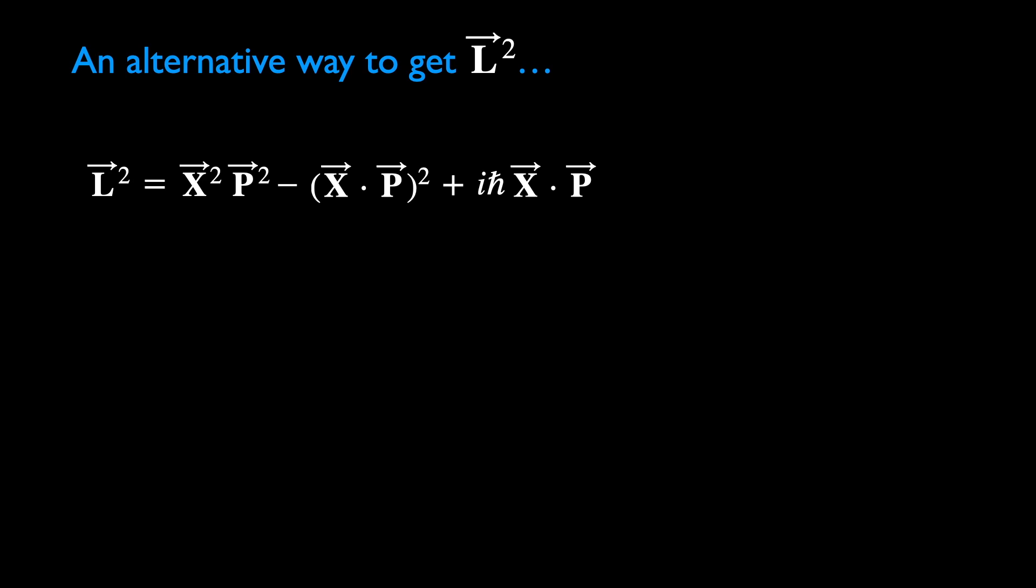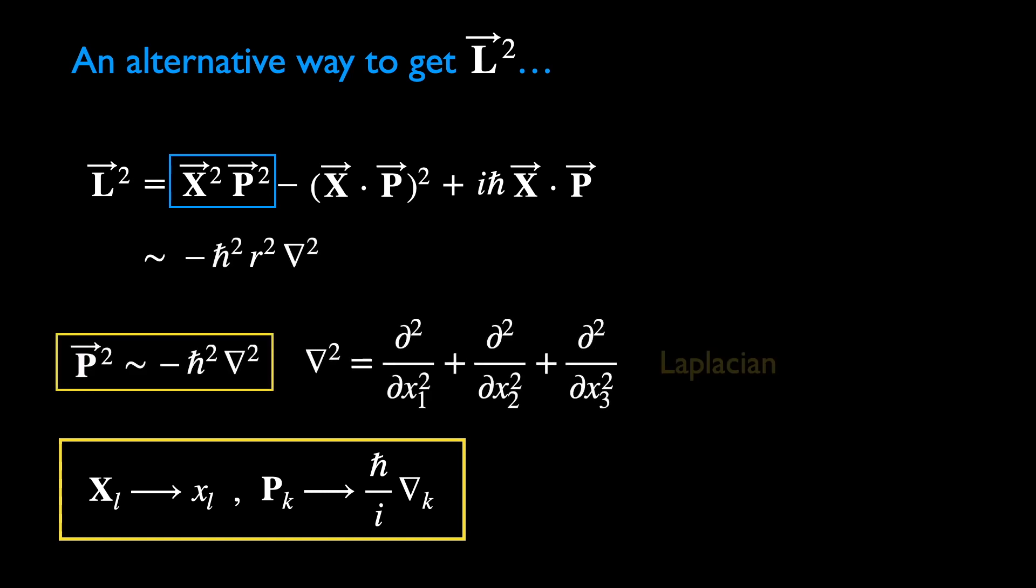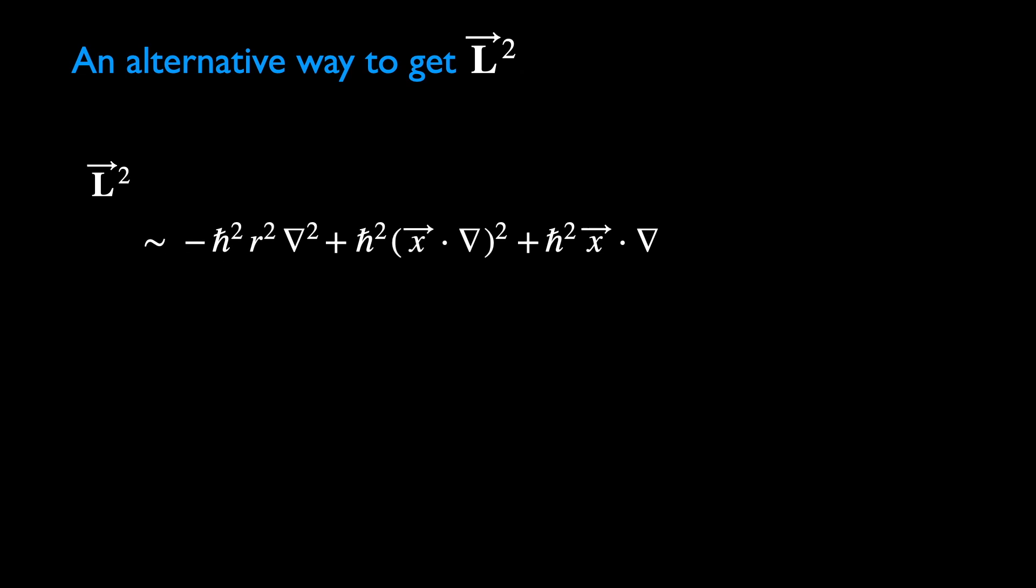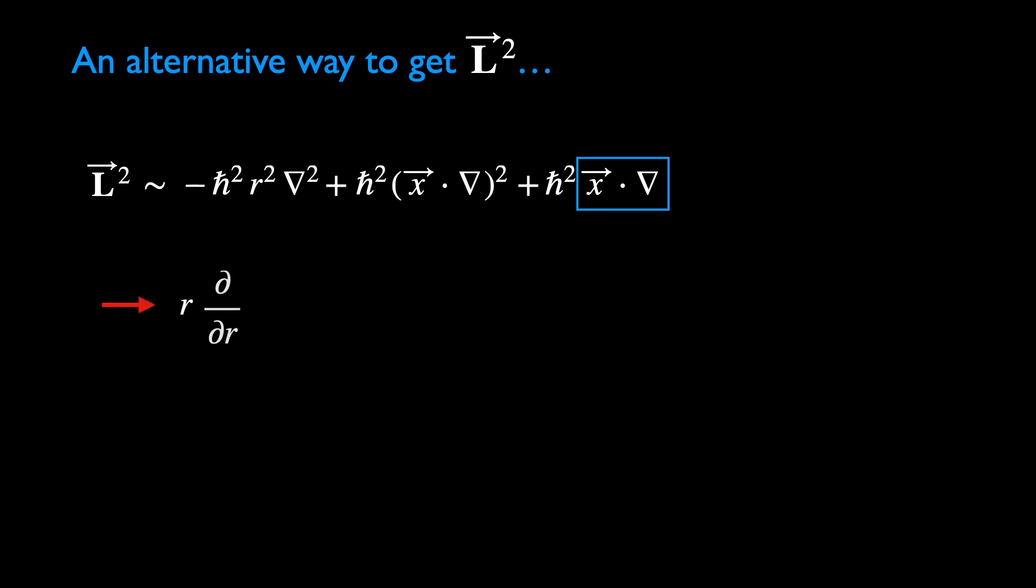Let's cast these into differential operators in position space, using the representations in the yellow box below. Now we shall verify our claim that x dot the gradient operator just gives r times r derivative. Using the chain rule, this is where we could use an earlier identity from the Pythagoras theorem.